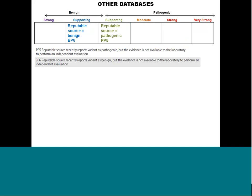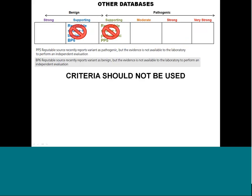For the 'other databases' criteria — PP5 (reputable source saying pathogenic, supporting) and BP6 (reputable source saying benign, supporting) — the SVI group recommends these should not be used as a default, because using them essentially double-counts evidence. If a lab has called a variant pathogenic based on segregation data and you're also assessing that same evidence, applying PP5 on top is redundant. Instead, reach out to those labs to ask what evidence they used and incorporate that directly into your own interpretation.